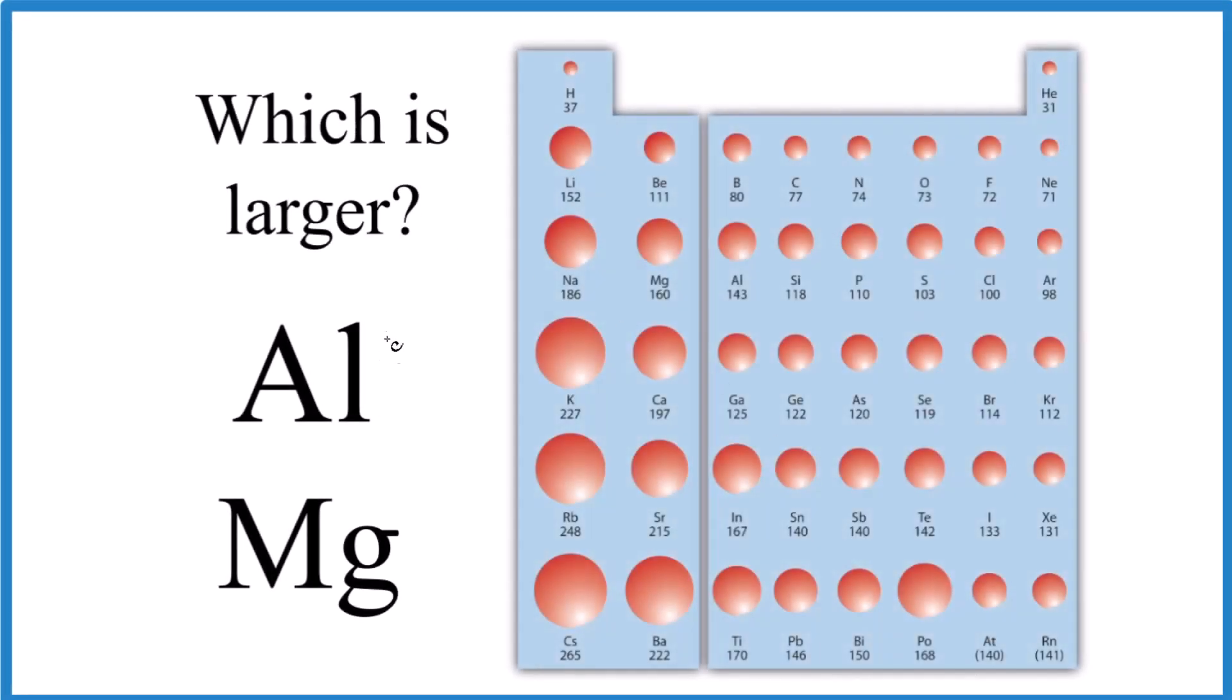Which of these two elements has a larger atomic radius, Al or Mg, aluminum or magnesium?